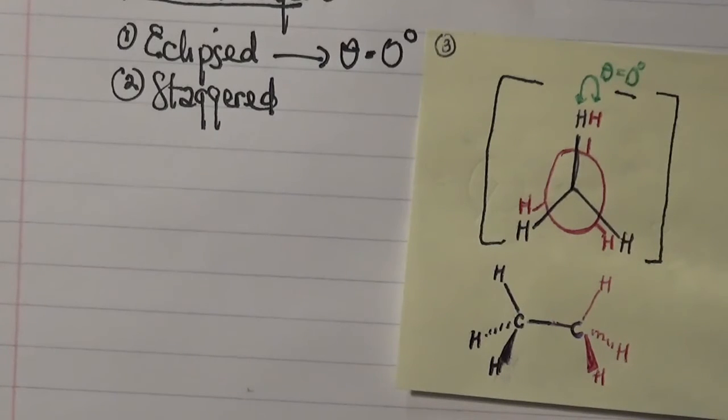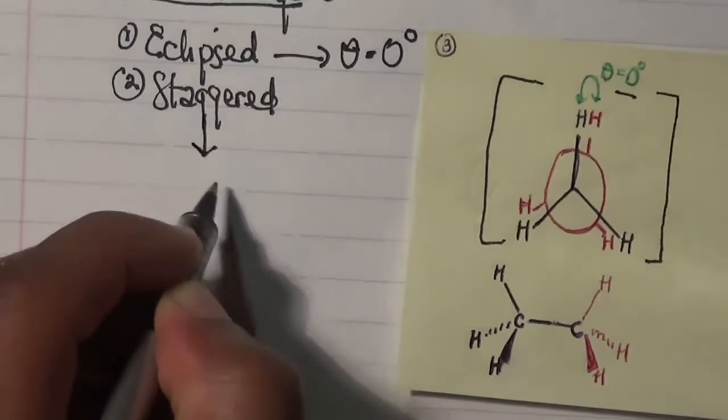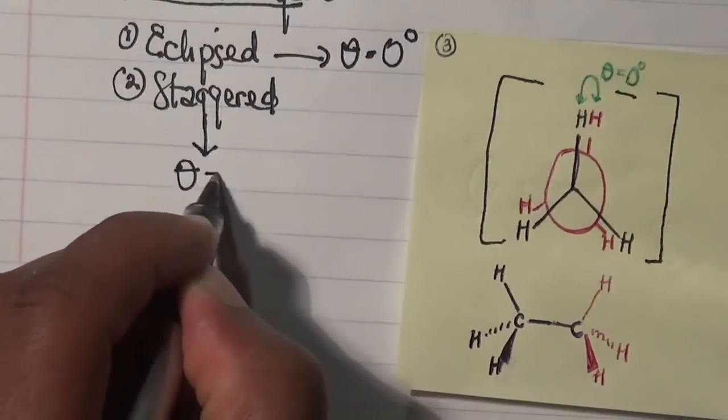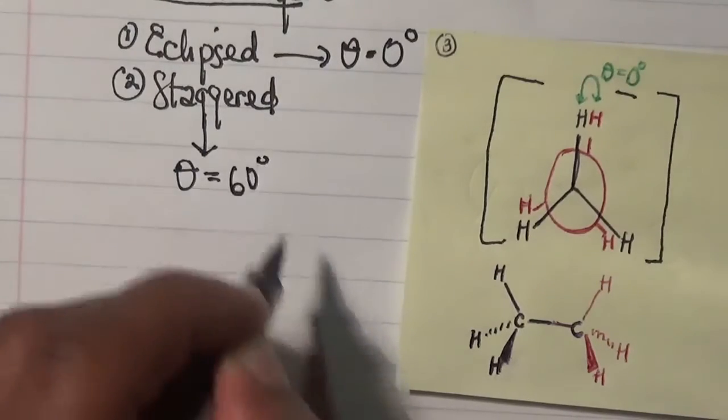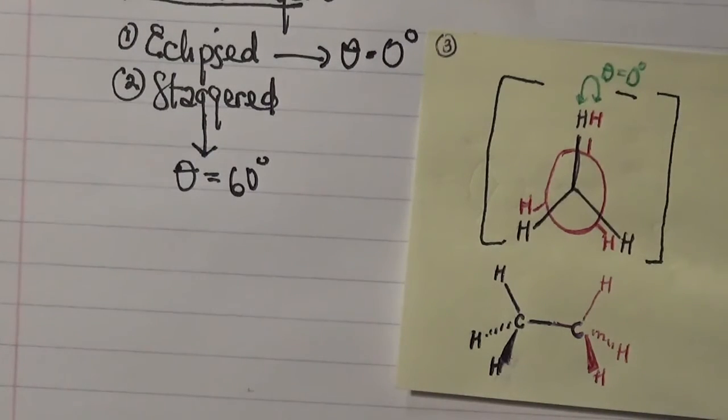Now, on the other hand, we have the staggered conformation which forms an angle of 60 degrees. And let me write it here. So this staggered conformation has an angle of 60 degrees. As a consequence, there is a shift in the hydrogen atoms halfway at the back of the carbon hydrogen atom, and this is shown in the diagram over here.